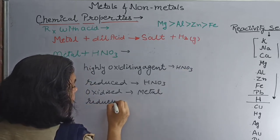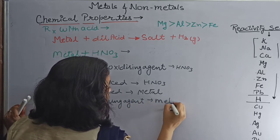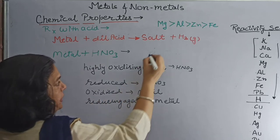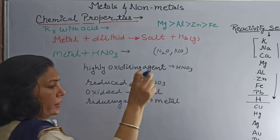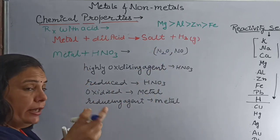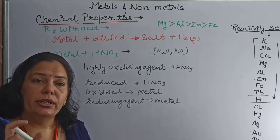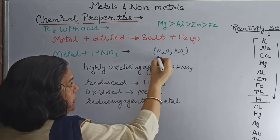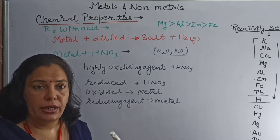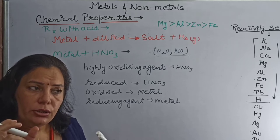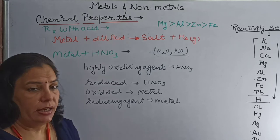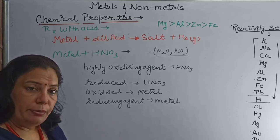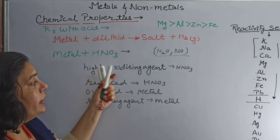When metal reacts with nitric acid, the products are changed — instead of salt and hydrogen, gases like NO2, N2O, or other nitrogen oxides are formed. The reason products change is that nitric acid is a highly oxidizing acid. So we generally do not write the reaction of metal with nitric acid.